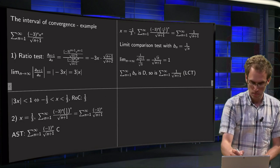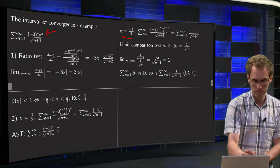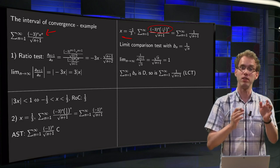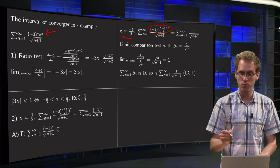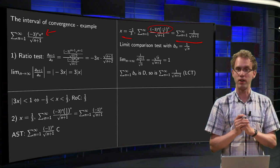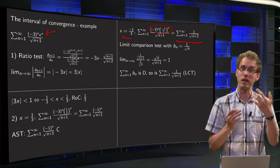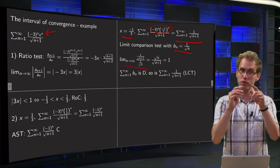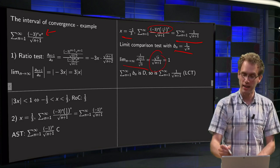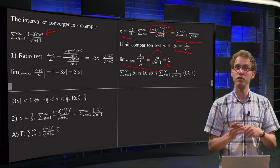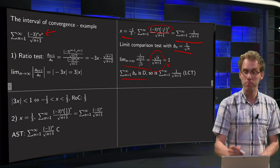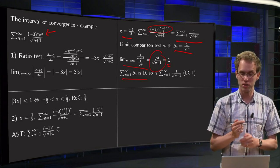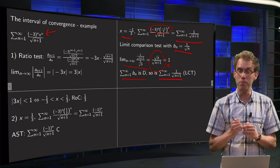Next, x equals minus 1/3: plug it in to get minus 3 to the power n times minus 1/3 to the power n, merged into one power: minus 3 times minus 1/3 equals 1, so we end up with the sum of 1 over the square root of n+1. This behaves like 1 over the square root of n, so we use the limit comparison test with b_n equals 1 over the square root of n. The limit of the quotient equals 1, which is neither 0 nor infinity, and since the sum of b_n is divergent, this series is also divergent by the limit comparison test.